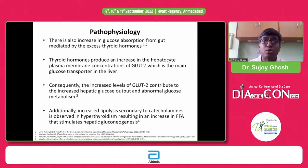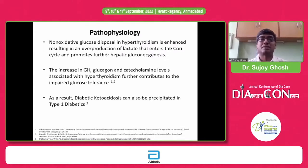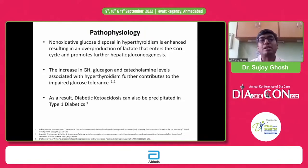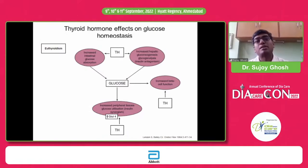There is increased lipolysis, which increases free fatty acids and worsens glucose control. All of that, particularly in a milieu of increased glucagon and catecholamines in a type 1 individual, can actually precipitate diabetic ketoacidosis. This slide summarizes all those findings about the effect of thyroid hormone on glucose homeostasis.